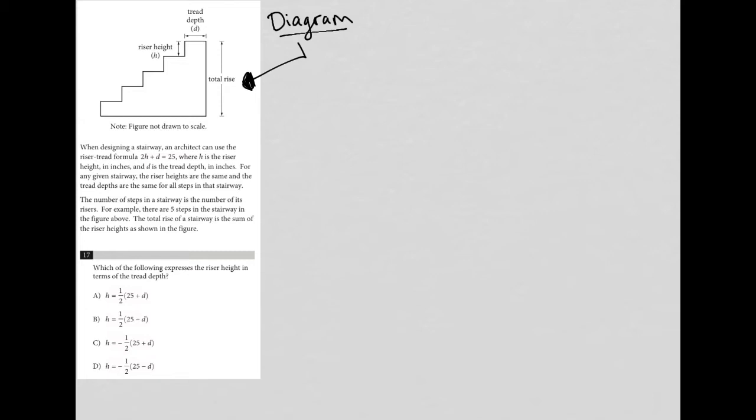So it looks like we have a staircase and we have a riser height and we have a tread, something called a tread depth. And then we have a total rise here. We have one, two, three, four, five steps. And it does say figure not drawn to scale. That may become important.